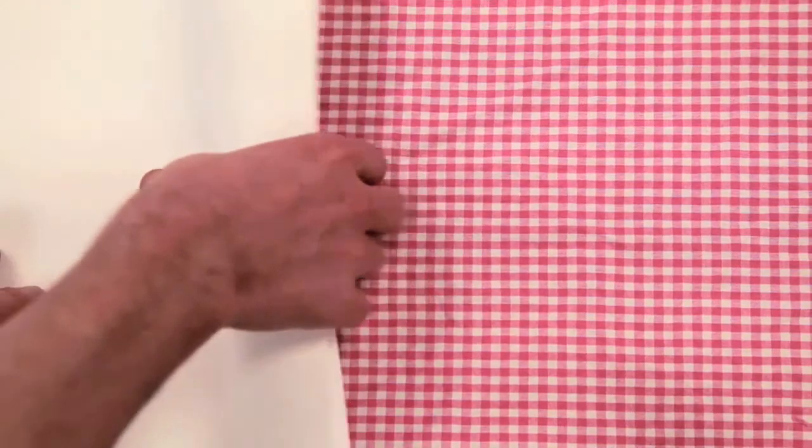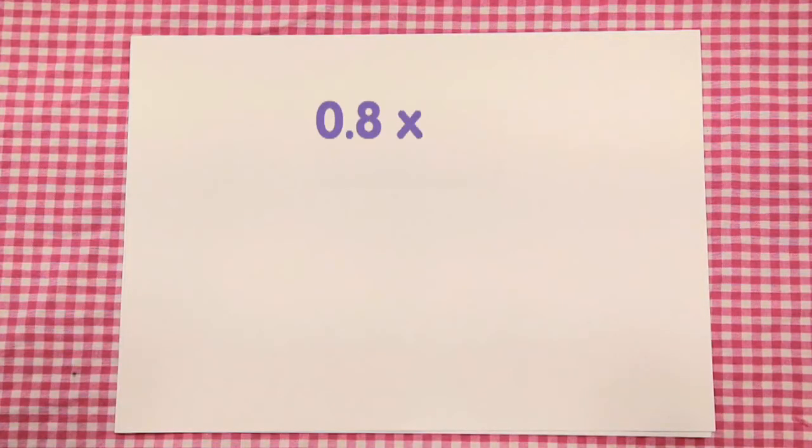Sometimes we need to use our times tables to solve more difficult calculations quickly. The rectangle cupboard measures 0.8 metres by 0.9 metres. What is the area of the floor of the cupboard? To find the area of the cupboard, we will need to use our times tables.